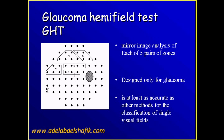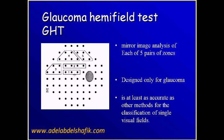Then we come to what is known as the Glaucoma Hemifield Test. It is a line written as 'Glaucoma Hemifield Test is normal,' 'borderline,' and so on. The Glaucoma Hemifield Test is based on the principle that in glaucoma, if you compare the sensitivity between the upper and lower half of the field, normally it should be identical.